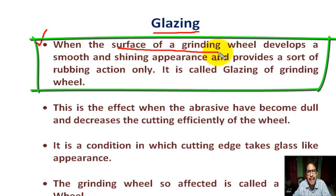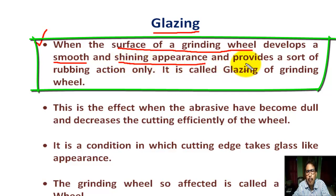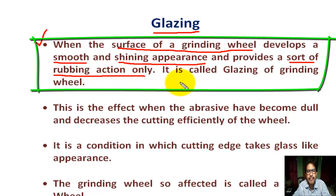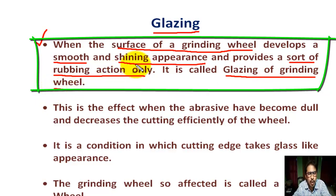The surface of a grinding wheel develops a smooth and shining appearance and provides a rubbing action only. This is called glazing of the grinding wheel. With continuous use, a grinding wheel becomes dull, with sharp abrasive grains becoming rounded.